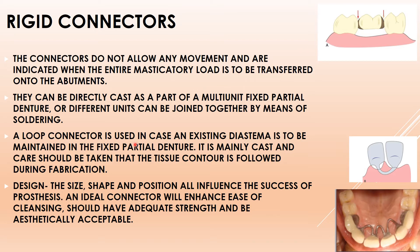The loop connector is used when an existing diastema is to be maintained in the fixed partial denture. If the patient has an anterior diastema, this loop type of connector is used. It is mainly cast, and care should be taken that the tissue contour is followed when fabricating a loop connector. The design — size, shape, and position — all influence the success of the process.